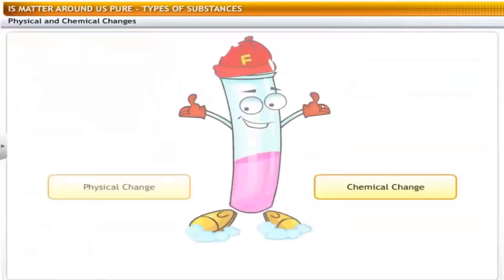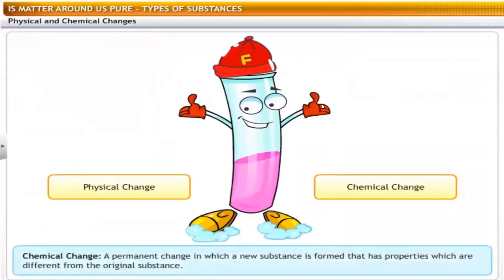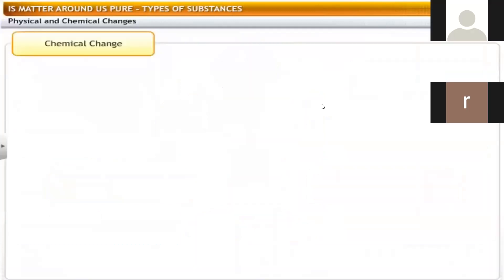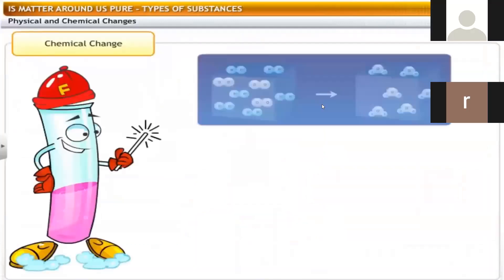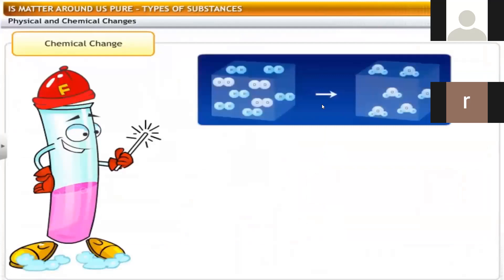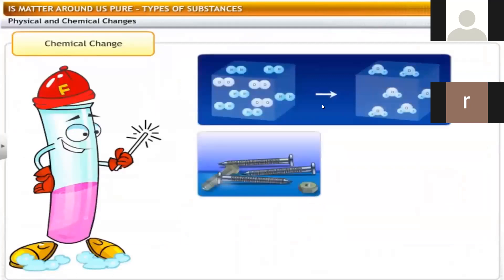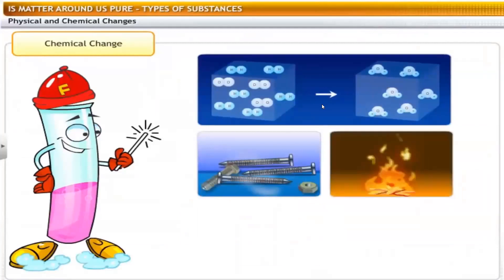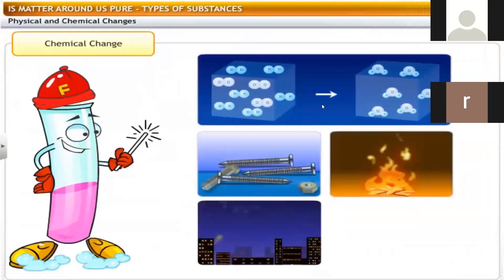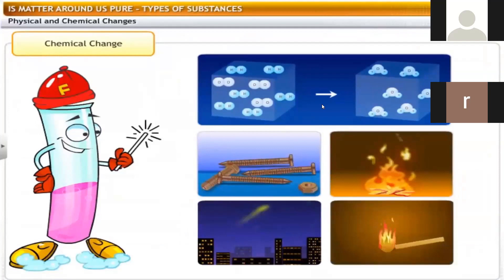We can define a chemical change as a permanent change in which a new substance is formed that has properties different from the original substance. For example, formation of water from hydrogen and oxygen atoms, rusting of iron, burning of wood, lighting of firecrackers, and burning of a matchstick.